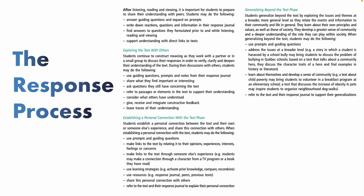Exploring the text with others is more at the superficial level — what's going on in the text, what are some of the main ideas. Establishing a personal connection means making links to our own experiences and what we're reading. Then we move beyond, which is the critical thinking stage. I encourage you to pause here and read a little bit more closely.